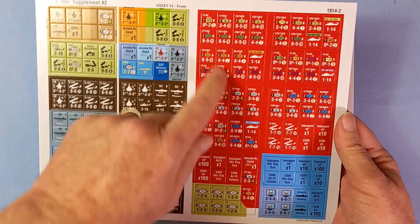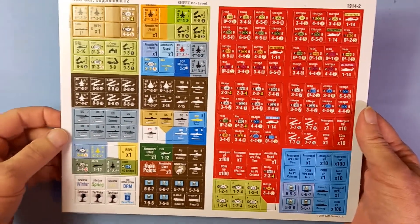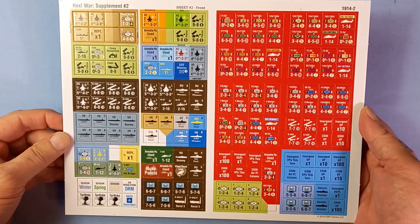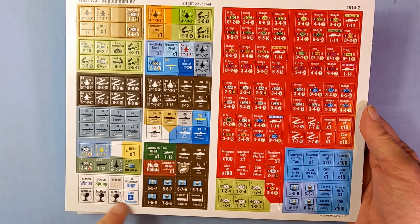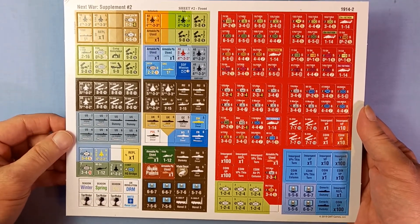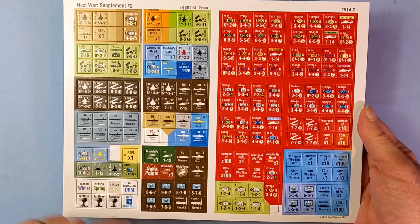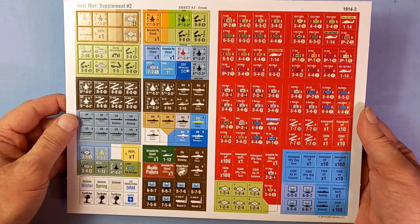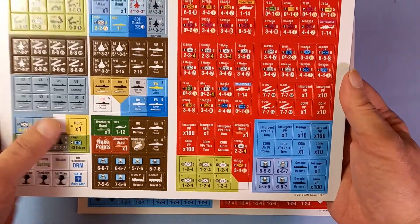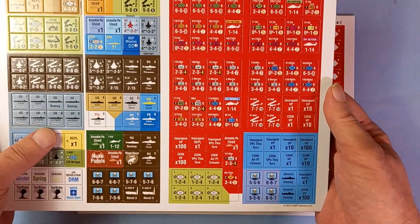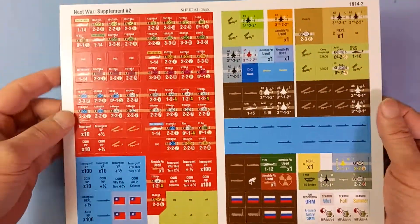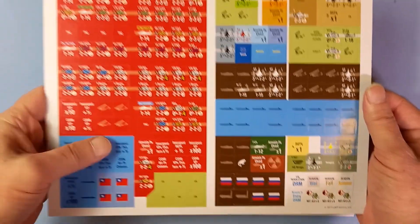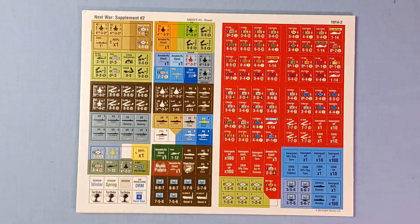And the second countersheet. I assume this is the additional counters they were talking about in the booklet. Some season counters there. These look like the cyber war stuff from supplement number one. There we go. Some more sub stuff. There we are.